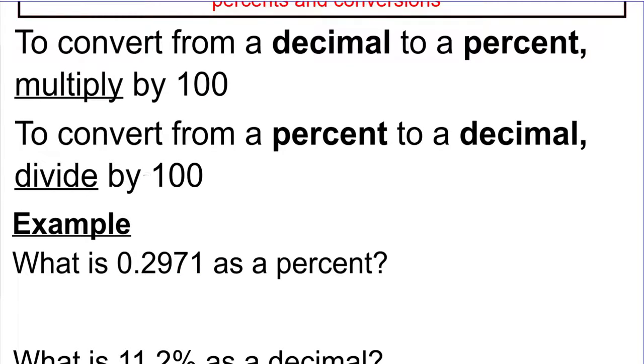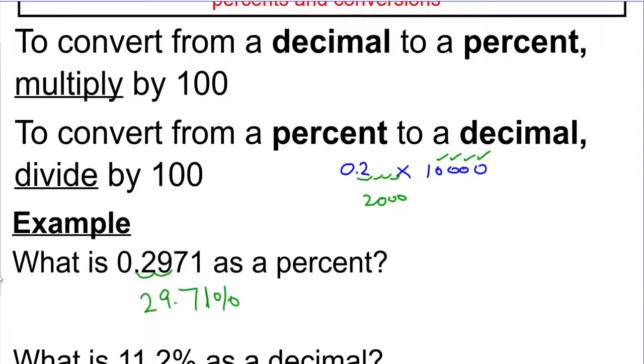We're going to use the fact that this is all based on 10s to help us out. If I had 0.2 times 10,000, we had a rule that said if you multiply by multiples of 10, we can move the decimal point for every 0 we have. I just move this over four times and get 2,000. We can use that here. If I multiply by 100 to turn this into a percent, two decimal places, multiplying by 100 is the same as moving it over two decimal places.